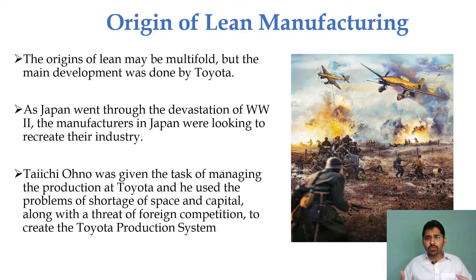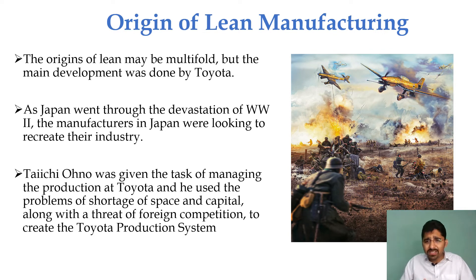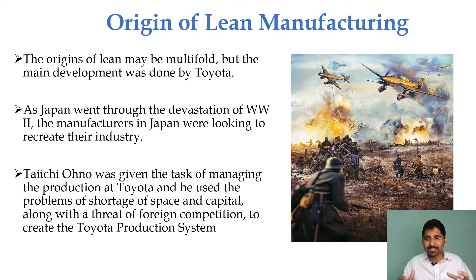During World War 2, Japan was heavily impacted — the space and land were destroyed. Taiichi Ohno wanted to use the remaining available space to build an effective system, which is called the TPS — the Toyota Production System.